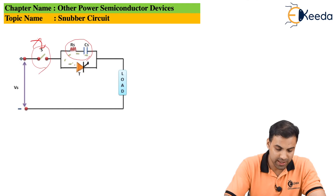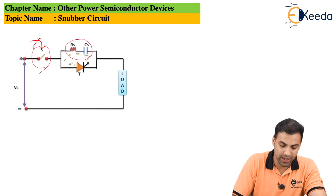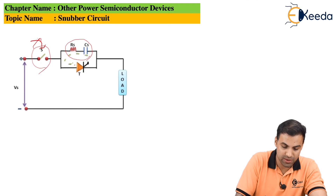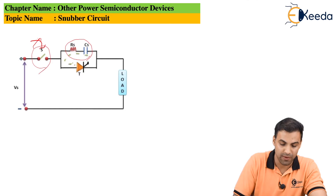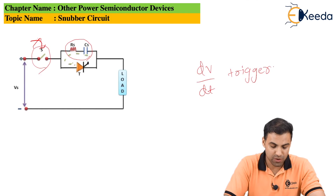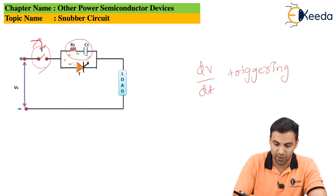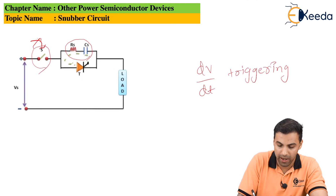There is a switching device here. Whenever this switch opens and closes, the voltage increases and falls — this is called switching voltage. Because of the switching voltage, whenever there is a switching operation, the voltage changes with respect to time, resulting in dv/dt triggering.